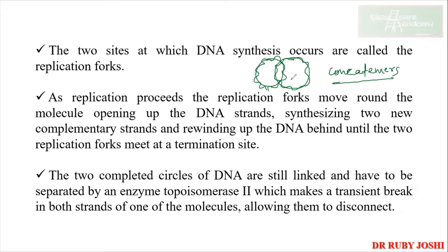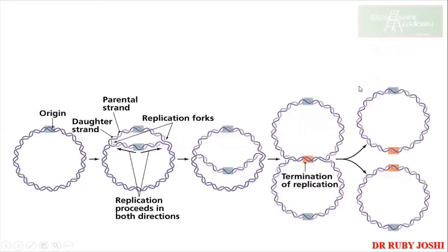In order to separate the catenanes, both strands need to be broken and rejoined. In bacteria this is done by DNA gyrase — which is topoisomerase 2 in bacteria — and in eukaryotes it is topoisomerase 2. Looking at the figure, you can see the origin of replication with replication forks proceeding in both directions, with daughter strands coming together as the parental strands are opened up, forming the theta-like structure.